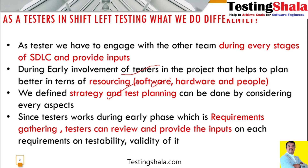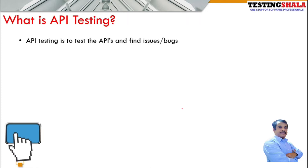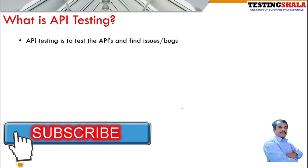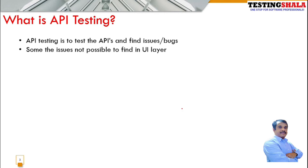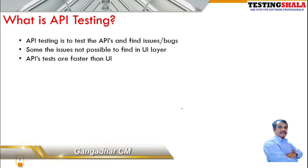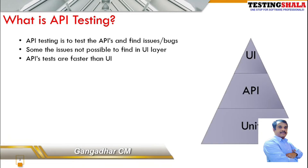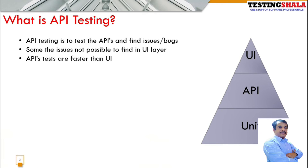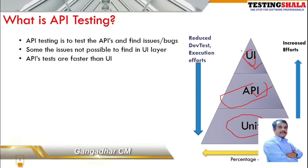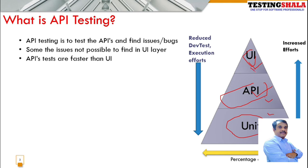API testing is about testing an Application Programming Interface to find issues or bugs. Some things cannot be tested via the UI layer, so those aspects are tested through API testing. API testing is generally much faster than UI testing. Overall, the testing pyramid shows unit testing should have the most tests, followed by API testing, then UI testing.